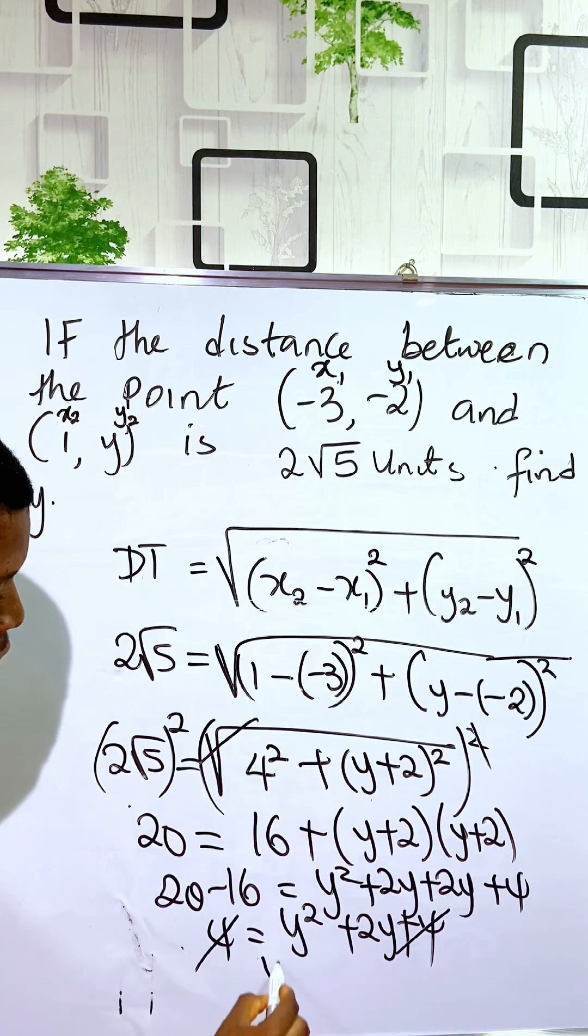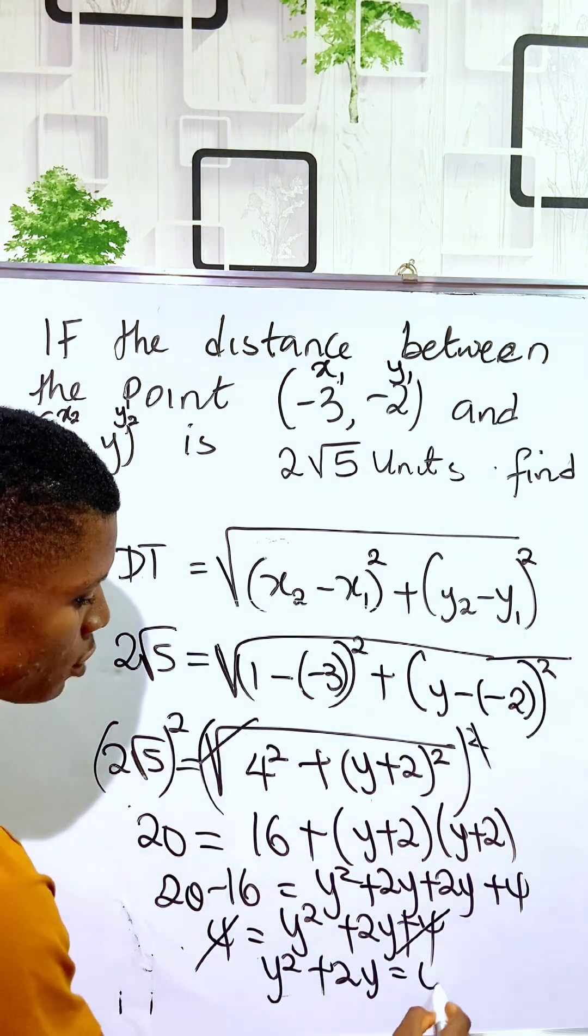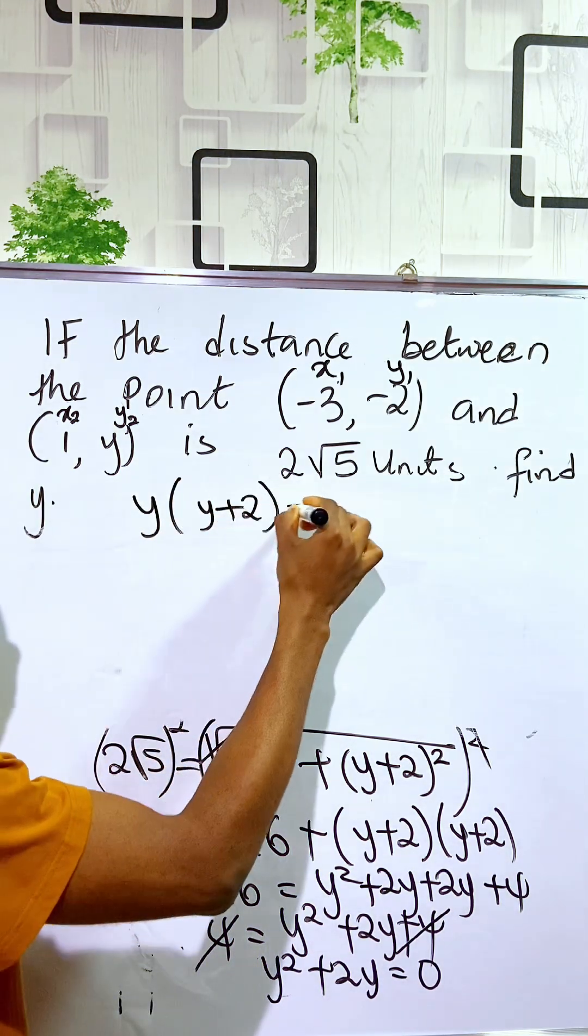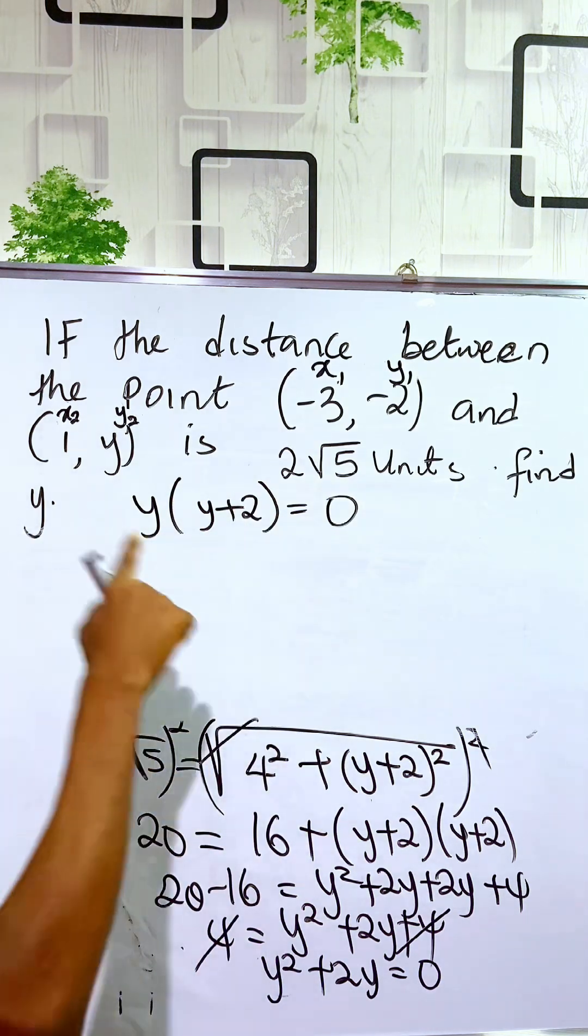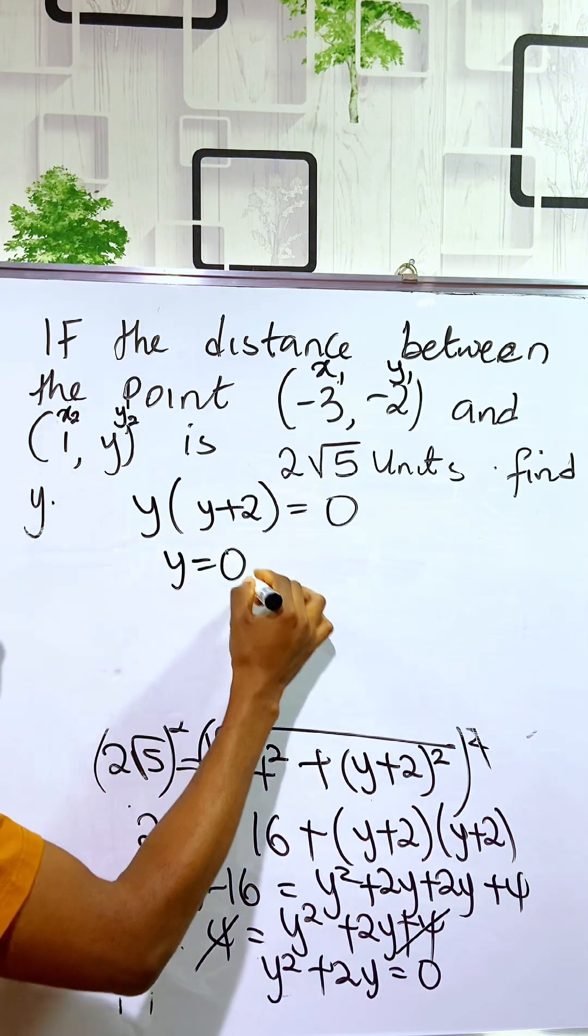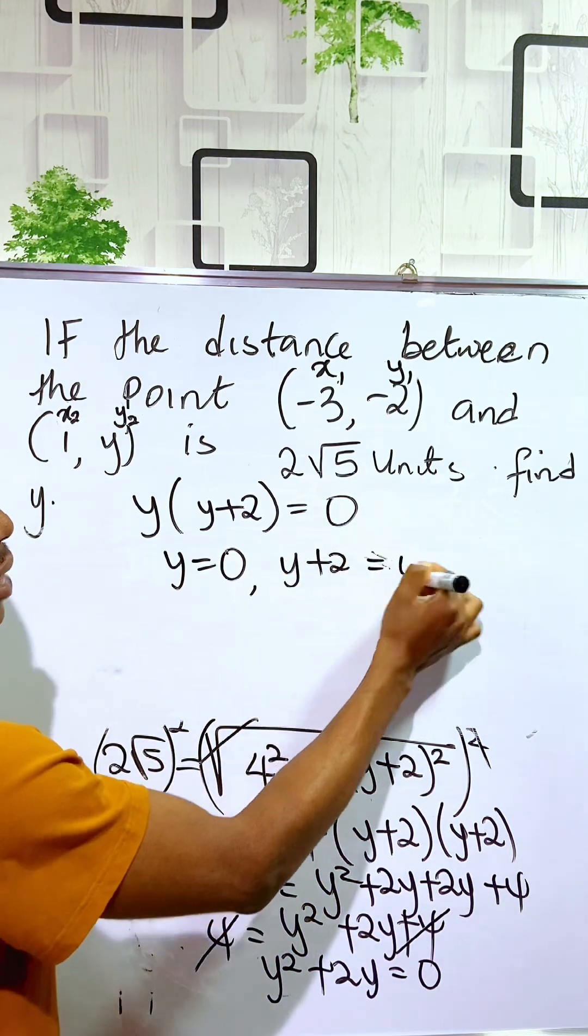y squared plus 2y is equal to 0. Y into (y + 2) is equal to 0. Two things are multiplying to give 0, meaning that y is equal to 0, or y plus 2 is equal to 0.